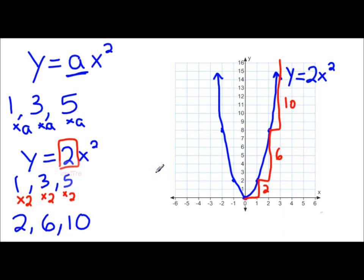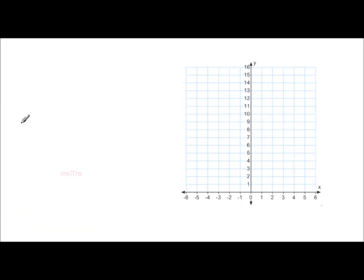So using the step pattern is a lot easier than having to fill out a table of values. Let's try one more example. Let's look at y equals 0.5 x squared. Our a value is the constant in front of the x squared. So our a value is 0.5. If you recall, the step pattern for y equals x squared is 1, 3, 5.